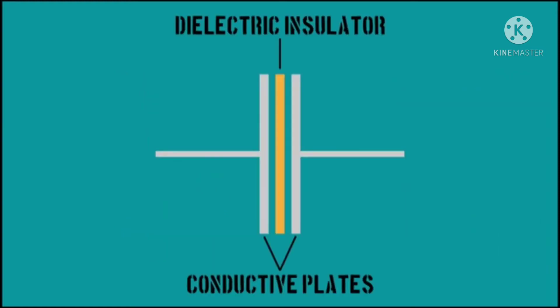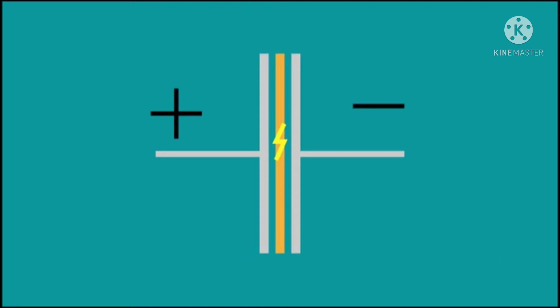A capacitor consists of conductors with an insulated dielectric separating them. The conductors have equal and opposite charge, creating a potential difference. Capacitance can be changed by altering the surface area of the conductors' material and the thickness of the dielectric.